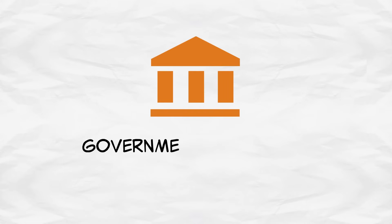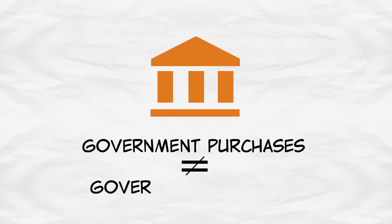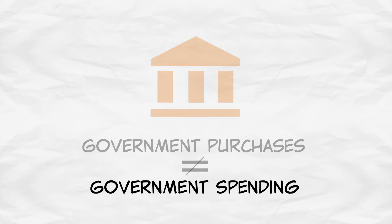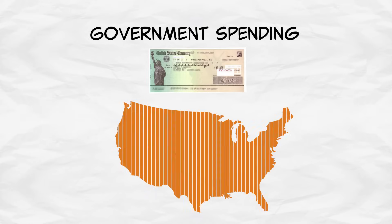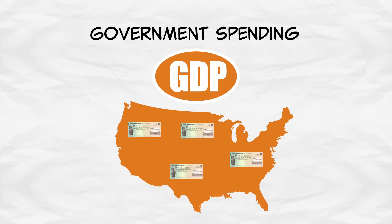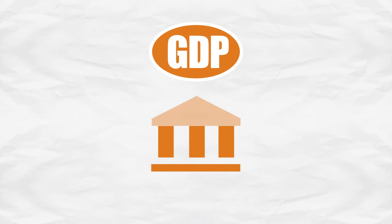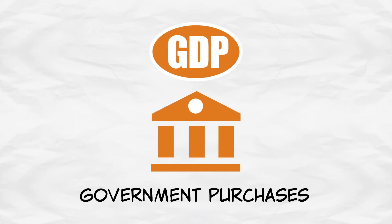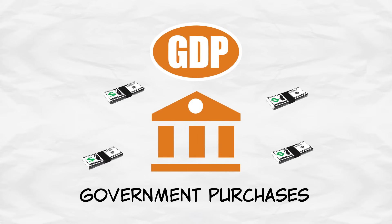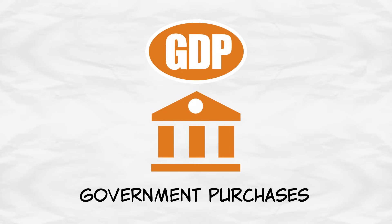It's important to remember that government purchases are different from government spending. When the government spends some tax revenue by sending out, let's say, a social security check, that's just a transfer — it doesn't add to GDP. When the social security recipient gets the check and spends it on goods and services, that does add to GDP, so we don't want to double count. Government purchases are just the money spent directly by government on goods and services.